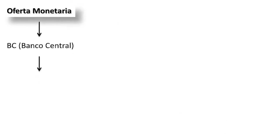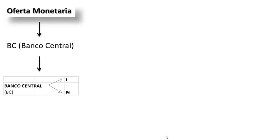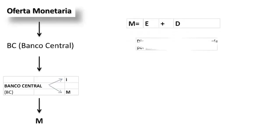La oferta de dinero la determina el Banco Central y hay distintas formas de modelizar su comportamiento en función a cuál sea su objetivo, ya sea controlar la tasa de interés o controlar la oferta monetaria. Son equivalentes en realidad, pues el Banco Central deberá intervenir para intentar estabilizar la economía, pero tradicionalmente se establece que se controla la cantidad de dinero, que llamaremos M. Entonces, ¿cómo controla el Banco Central la cantidad de dinero?